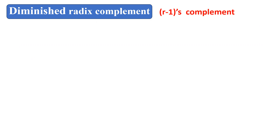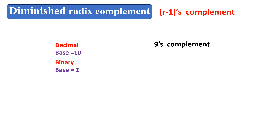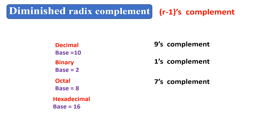Diminished radius complement. In a decimal number system, the base is 10, so the r minus 1's complement is referred to as the 9's complement. In a binary number system, the base is 2, and the r minus 1's complement is referred to as the 1's complement. In octal, the base is 8 and the r minus 1's complement is the 7's complement. In hexadecimal, the base is 16, so the r minus 1's complement is referred to as the 15's complement.